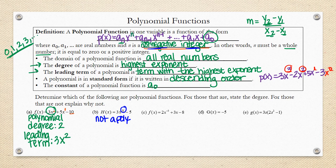Letter c, that would also be stated as a, not a polynomial. And that's because we have a negative exponent.